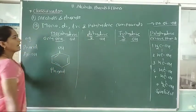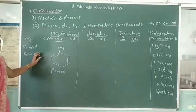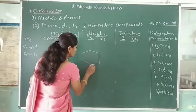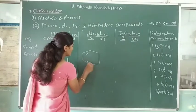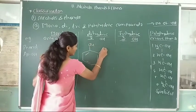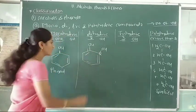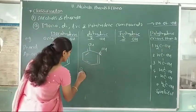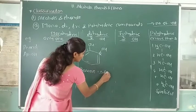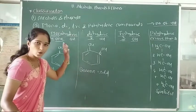In the second, dihydric phenol — two hydroxy groups are directly attached to the benzene ring. The first and second carbons — this is called benzene-1,2-diol.